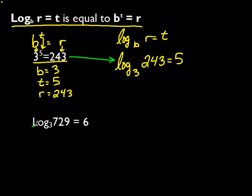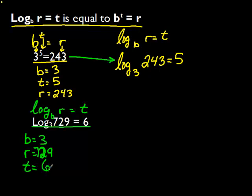We can do the same process for taking a logarithm and turning it into an exponent. We know that log base b of r equals t. If we look, b equals 3, r equals 729, and t equals 6. We can convert this over to b to the t equals r. So we end up by taking logarithm of base 3 of 729 equals 6. We can rewrite this as 3 to the sixth equals 729. It's the same equivalent formula, just rewritten.